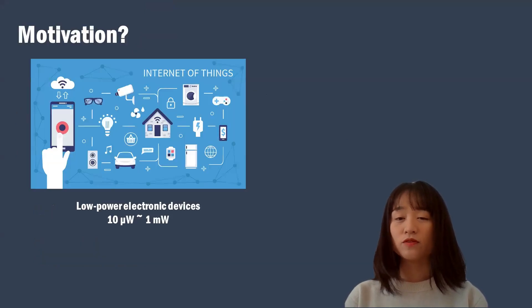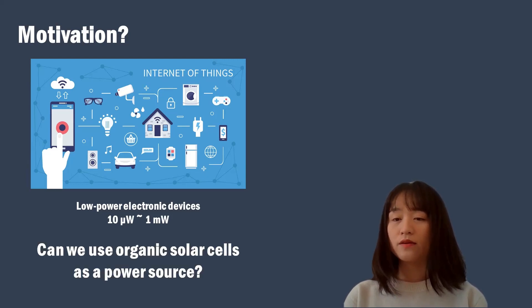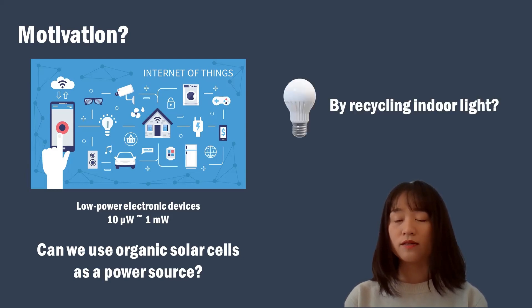What is the motivation of this work? Recently, wireless communication electronic devices have attracted greater attention, such as Internet of Things and many types of sensors. Thanks to the development of technology, these devices can perform with only a few micro to milliwatts of power. Therefore, a continuous power source is greatly needed for smooth connection between those devices. Here, we wondered can we use organic solar cells as the continuous power source by recycling indoor light?